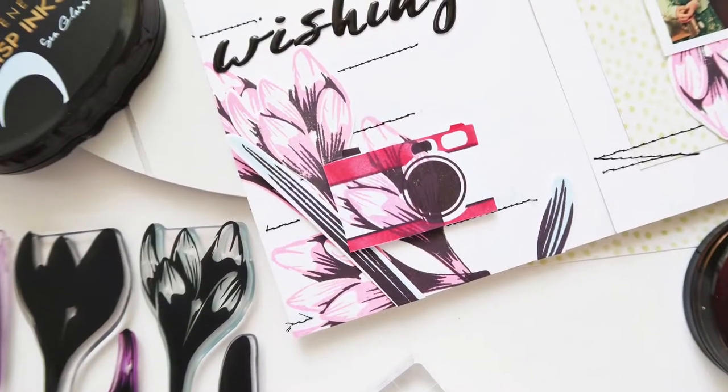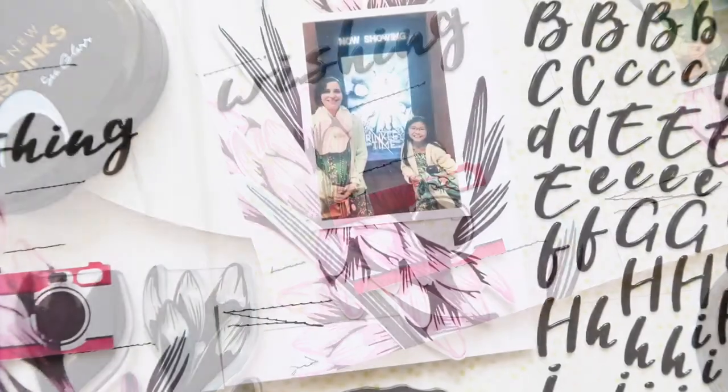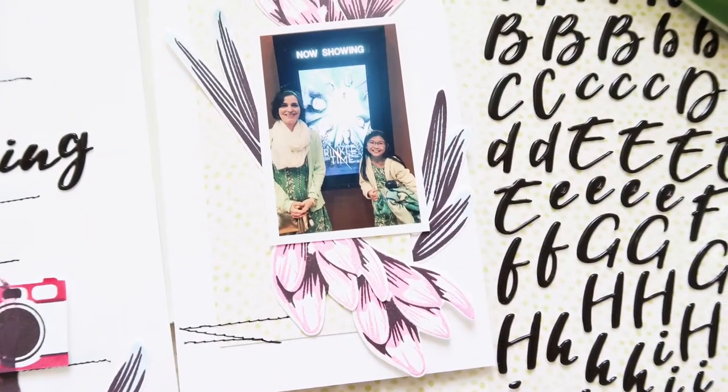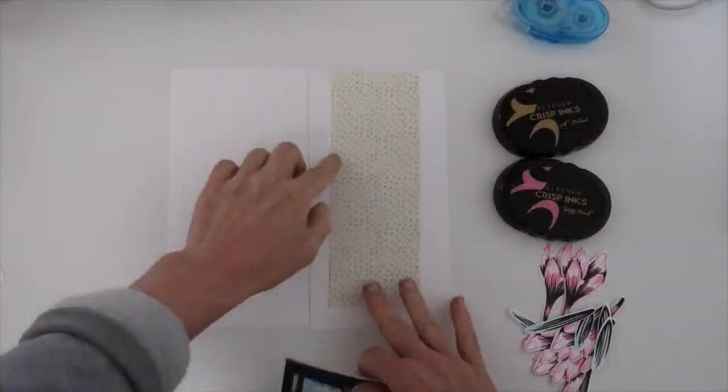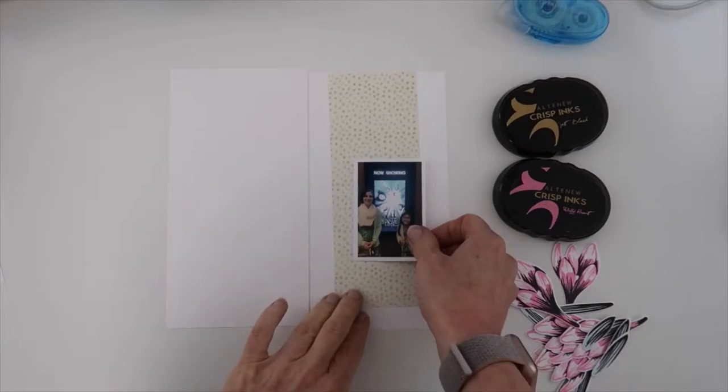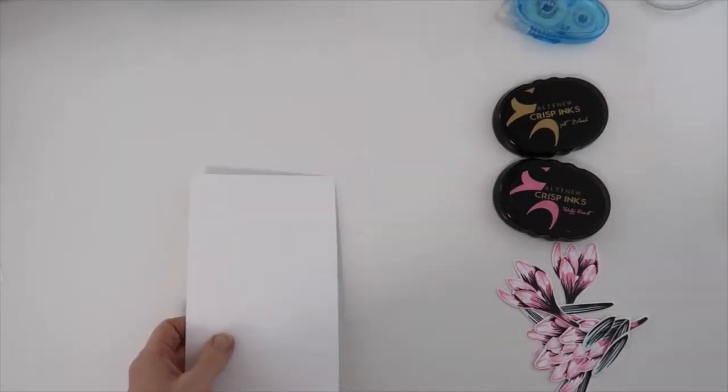Welcome everyone to the Altenew Build-A-Flower Hop. This is to celebrate the new release of the crocus flower. This is a beautiful big bloom flower with these really long stemmed leaves which I love. And of course, like with all of their stamps, they have so much detail to them.